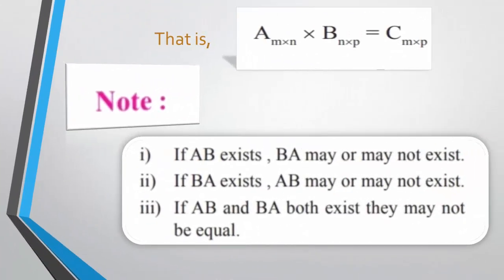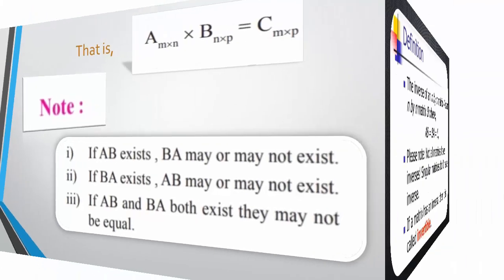Note: If AB exists, BA may or may not exist. If the product BA exists, then AB may or may not be equal to BA. If both products AB and BA exist, they may not be equal.